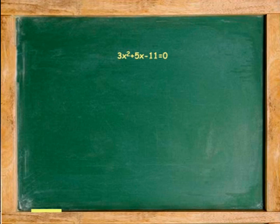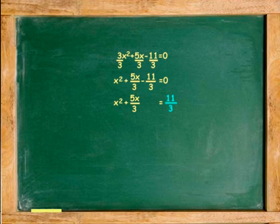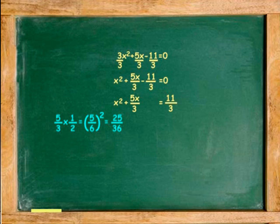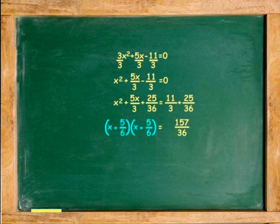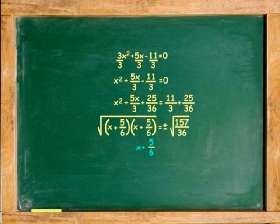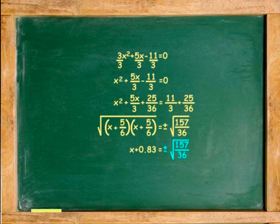Another example. Divide the equation by 3. Step 1: Move negative 11 over 3 to the right. Step 2: Complete the square — one half of 5 over 3 is 5 over 6, and 5 over 6 squared is 25 over 36. Add 25 over 36 to both sides. Factor the left-hand side as a perfect trinomial square and find the square root of both sides. x plus 5 over 6, which is 0.83, equals plus or minus the square root of 157 over 36, which is 2.088.